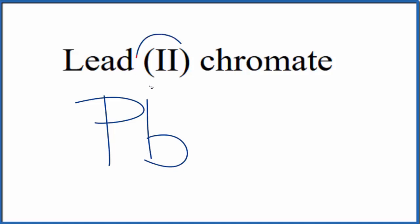And the 2, this Roman numeral 2 in parentheses, that tells us the lead will be 2+. For the chromate, when you see chromate, it ends in ATE. That means you won't find it on the periodic table. This is a polyatomic ion.